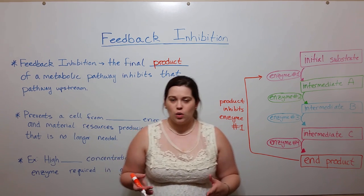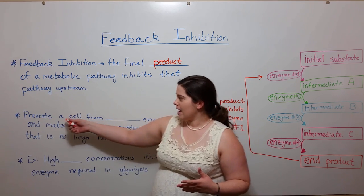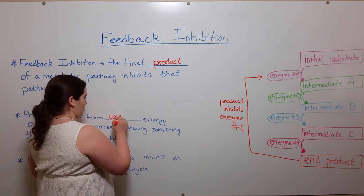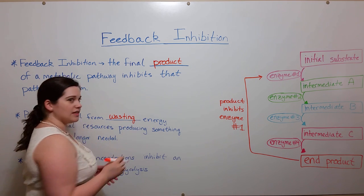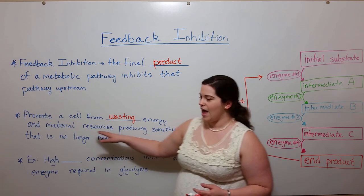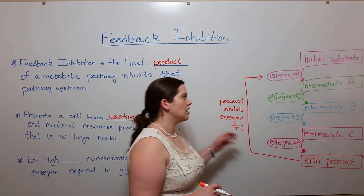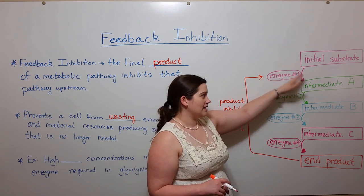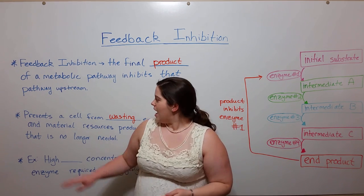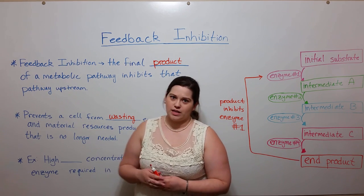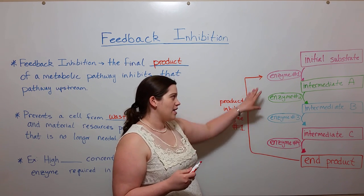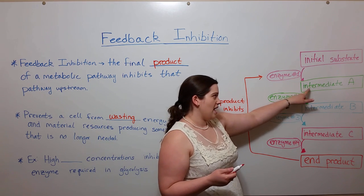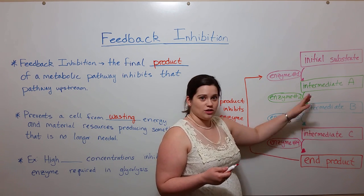Well, it has to do with waste. Feedback inhibition prevents a cell from wasting things — specifically from wasting energy and material resources. That is, from wasting energy producing these enzymes and having these enzymes act on these different intermediates. And preventing the waste of material resources means preventing the waste of things like the amino acids that are used to make these enzymes, and things like the precursors that are made to work on these intermediates.